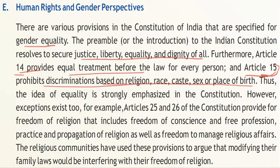However, exceptions exist. For example, Articles 25 and 26 of the constitution provide for freedom of religion, which includes freedom of conscience and free profession, practice and propagation of religion, as well as freedom to manage religious affairs. Religious communities have used these provisions to argue that modifying their family laws would interfere with their freedom of religion. So while Articles 14 and 15 emphasize equality and prohibit discrimination, Articles 25 and 26 guarantee freedom of religion, and this tension means complete gender equality still remains a challenge.